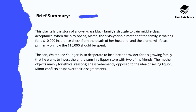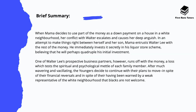His mother objects mainly for ethical reasons — she's vehemently opposed to the idea of selling liquor, and minor conflicts erupt over this disagreement. When Mama decides to use part of the money as a down payment on a house in a white neighbourhood, her conflict with her son Walter escalates and causes her deep anguish. In an attempt to make things right, Mama entrusts Walter Lee with the rest of the money, which he immediately invests secretly in the liquor store scheme, believing that he'll quadruple his initial investment.